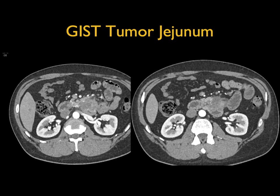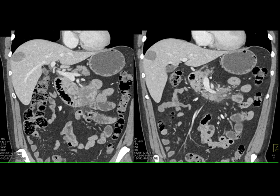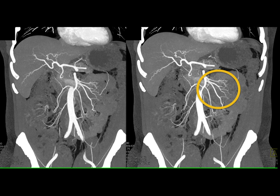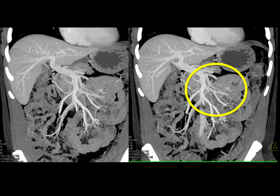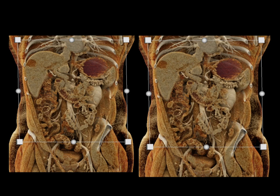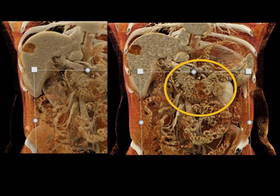An exophytic jejunal GIST looks identical to what you might call adenocarcinoma, with infiltration, encasement of the duodenum and jejunum, stranding, vessel involvement, stretching of vessels, and neovascularity — all nicely shown on imaging and on cinematic rendering. Cinematic rendering gives a really good representation and may be helpful in detecting tumors not well seen on standard imaging, accentuating the difference between tumor and normal bowel. Optimizing presets for specific tumors and applications makes everyone's job easier.